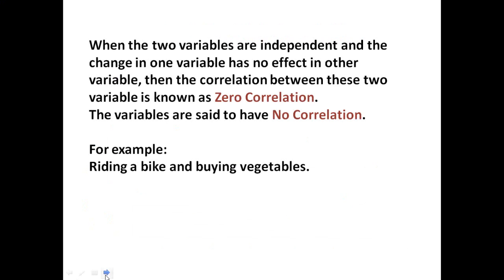When the two variables are independent and the change in one variable has no effect on the other variable, then the correlation between these two variables is called zero correlation. In this case the variables will be independent and will have no effect whatsoever on the other variable — so the variables have no correlation.